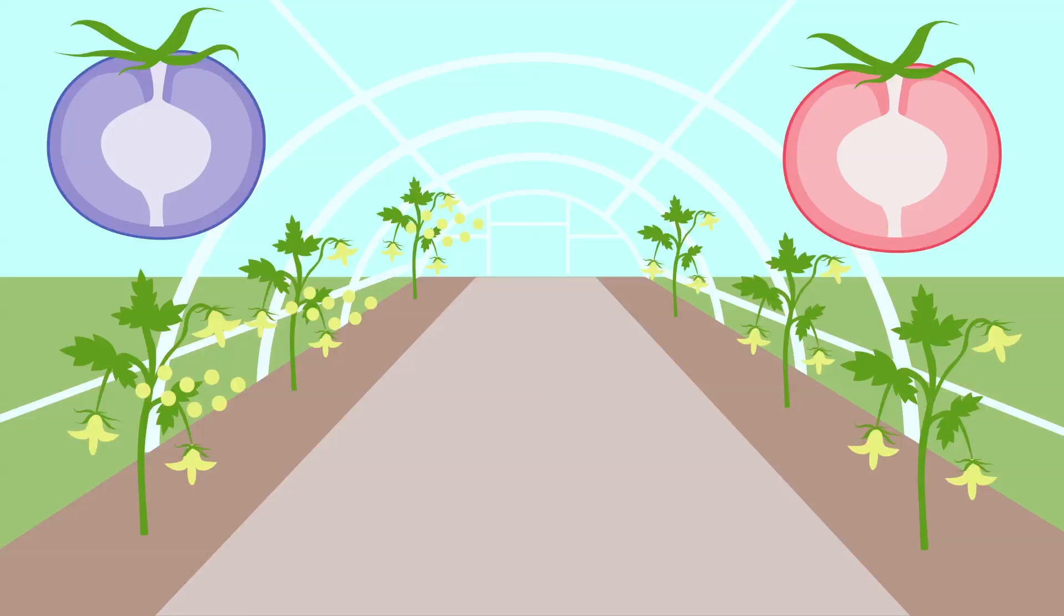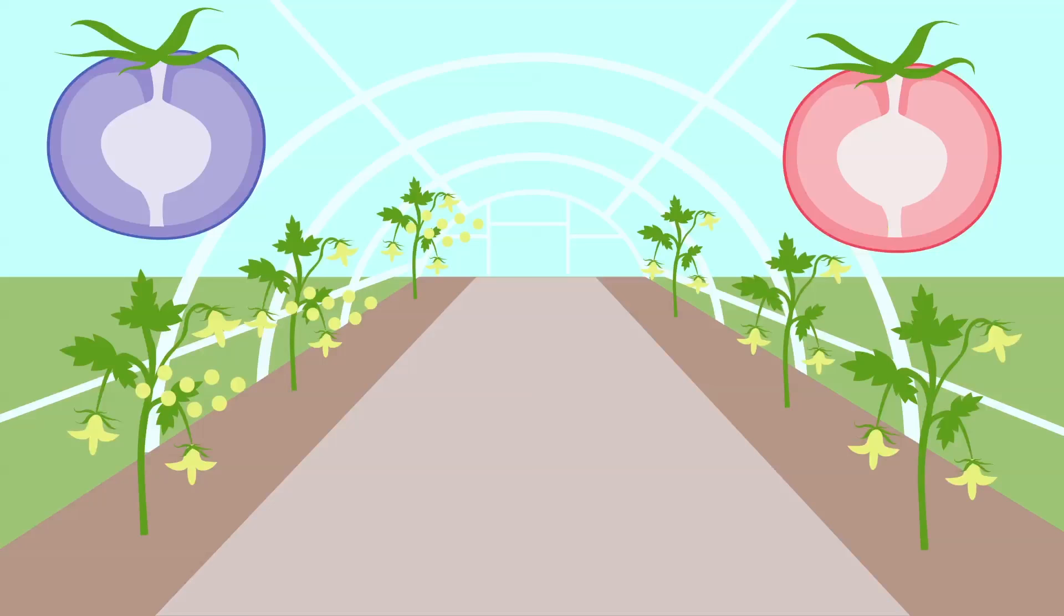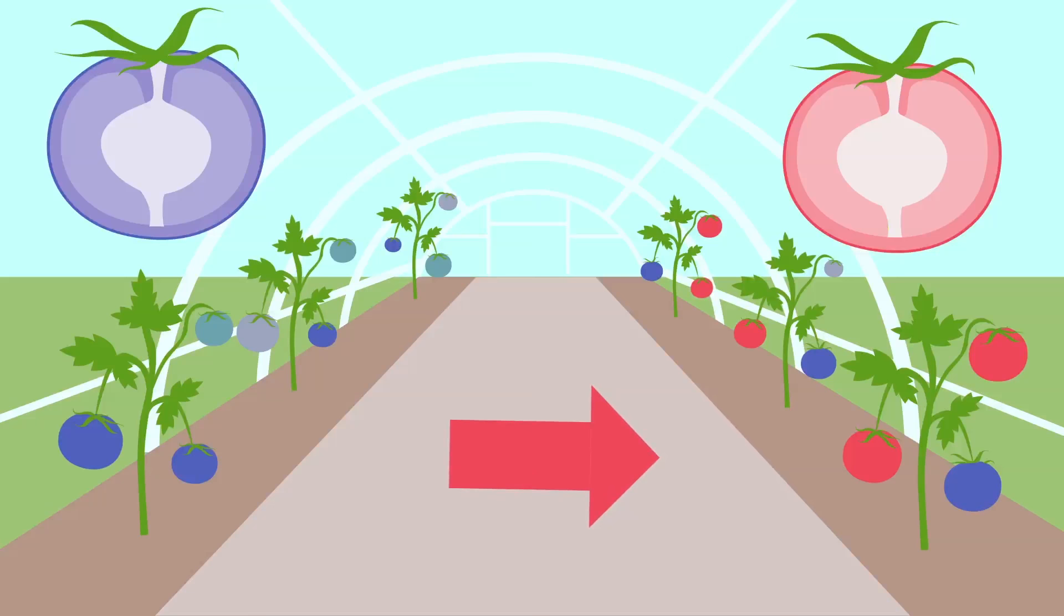When those tomato seeds begin to flower, a plant breeder would remove the pollen from one flower and place it in the flower of the other variety. This resulting batch of tomatoes is called F1 in the seed breeding world.